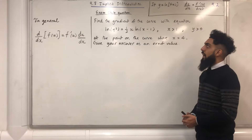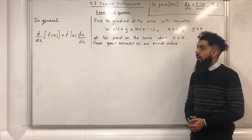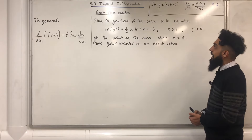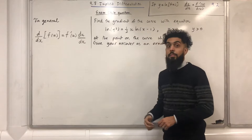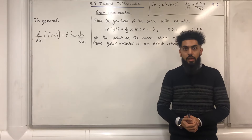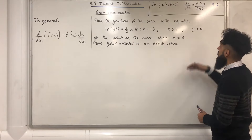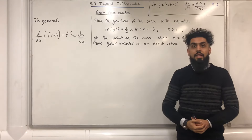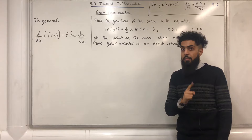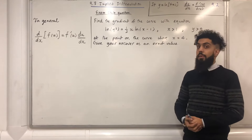Here's another exam-style question. Find the gradient of the curve with equation ln y squared equals one half x multiplied by ln(x minus 1), where x is greater than 1 and y is greater than 0, at the point on the curve where x equals 4. Give your answer as an exact value. We have an implicit equation because neither y nor x is the subject, so we need to use implicit differentiation. Note: differentiating a natural logarithm — if y equals ln f(x), then dy/dx equals f dash of x over f of x, covered in video 9.2.